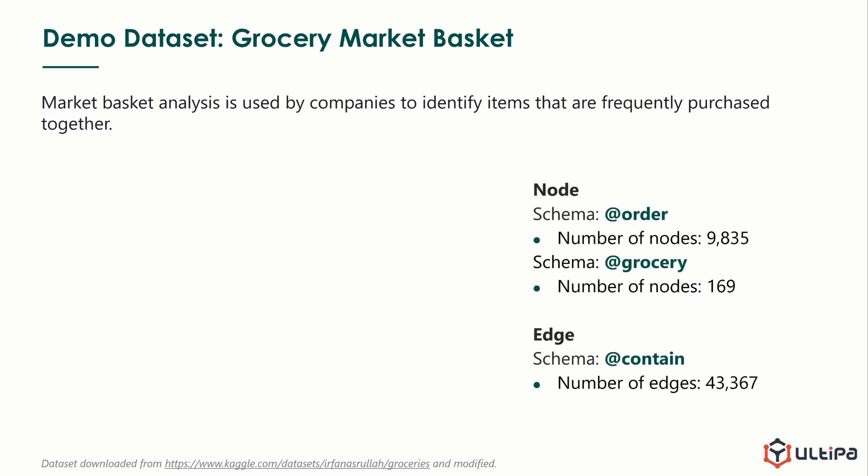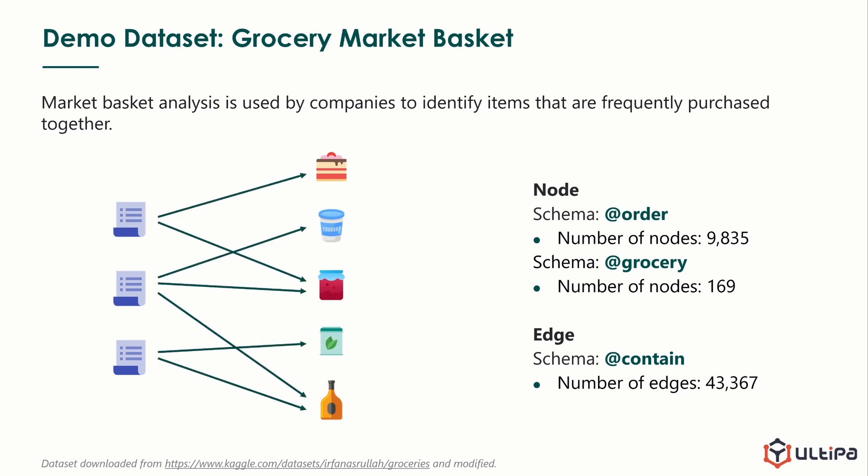The dataset contains more than 9,000 orders and 169 groceries. They are both nodes. Between them, there are edges from order to grocery, meaning that the grocery is contained in a specific order. Next, we will compute the Jaccard similarity and overlap similarity between different groceries. If a pair of groceries has high similarity score, that means they are purchased together more often in the previous sales.